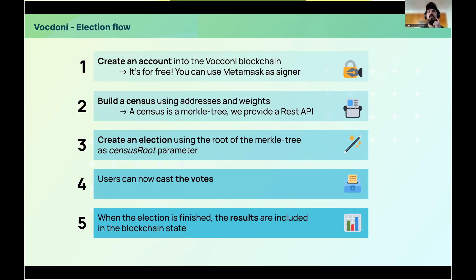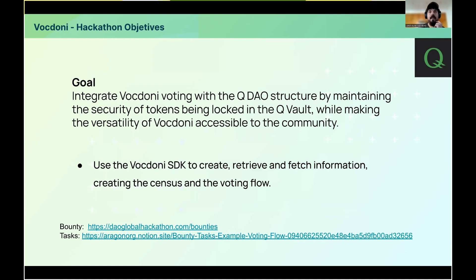Currently we don't have on-chain execution, but you can upload the results to Ethereum using an optimistic mechanism like via a transaction or Chainlink. The hackathon objective is a partnership with the Q project to integrate the Vocdoni voting with the QDAO structure, maintaining the security of tokens and making the Vocdoni voting flow accessible to the Q community.